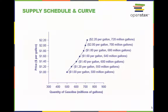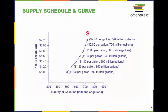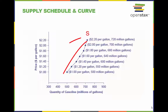The supply schedule is the table that shows quantity supplied of gasoline at each price. As price rises, quantity supplied also increases, and vice versa. The supply curve S is created by graphing the points from the supply schedule and then connecting them. The upward slope of the supply curve illustrates the law of supply — that a higher price leads to a higher quantity supplied, and vice versa.